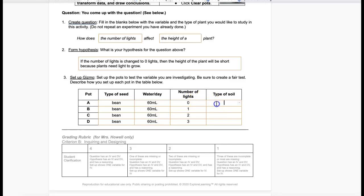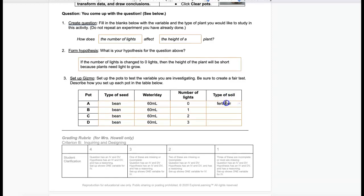And then for the type of soil, I will choose fertilizer for all of my pots. And that completes the Criterion B for this growing plant summative.